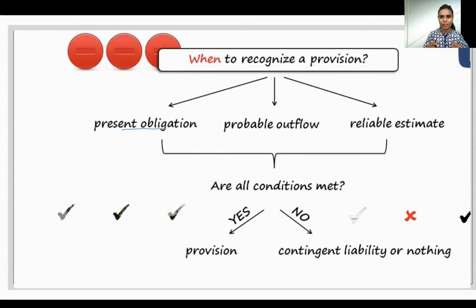Moving ahead, we will be talking about probable outflow. Probable outflow of your resources. That is the reason you create provision for bad debts. So it is a probable outflow. It should be probable outflow.